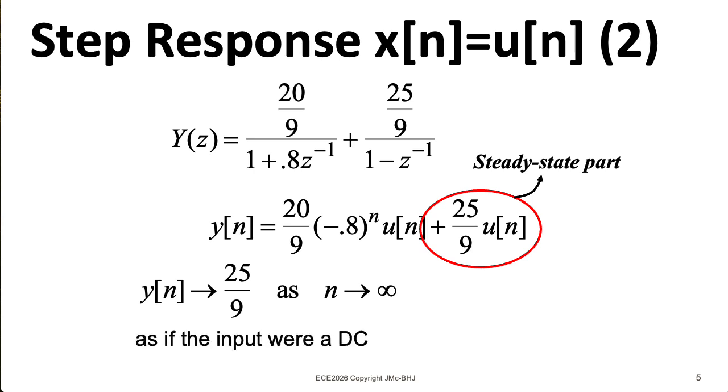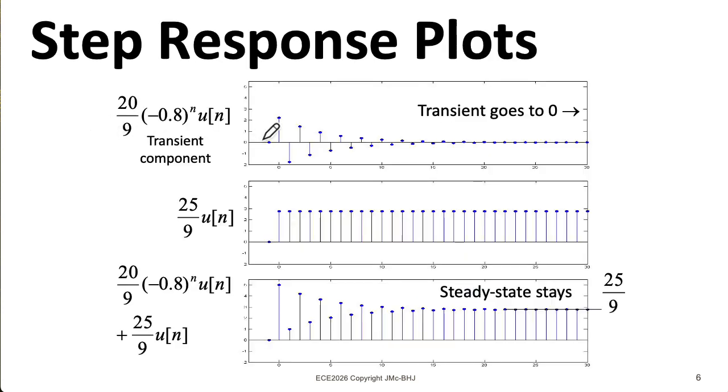Now here's the interesting part. You could get that 25 over 9 just by plugging omega hat equals 0 into the frequency response. So yeah, we put in a unit step function, but if you wait long enough, you get the same output as if you had just put in a unit constant for all time. That first term, the transient term, is shown here in the top graph.